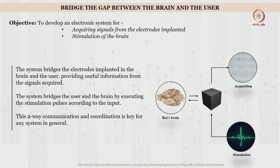The purpose of the system in a single sentence is to bridge the gap between the brain and the user. As we see in this NPTEL course, we are focusing on rat brains or rodents in general. Before moving on to human brains, we have to prove theory in rat brains, hence focusing on rodent models. The objective is to develop the system for two main things: one is acquiring signals from the brain via implanted electrodes, and the second objective is how to stimulate the brain.